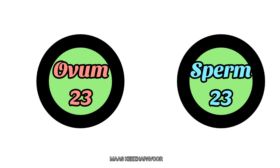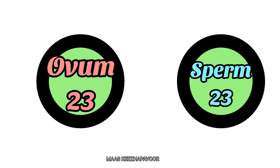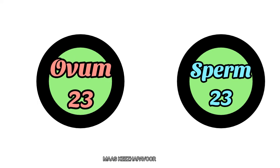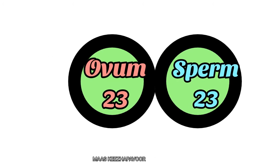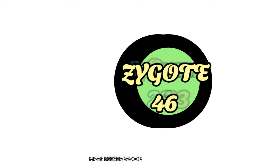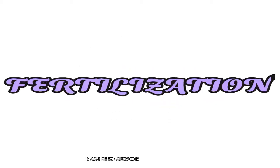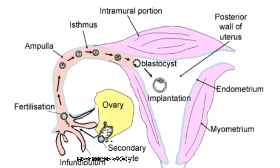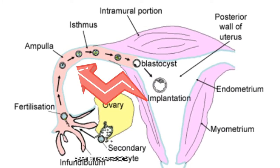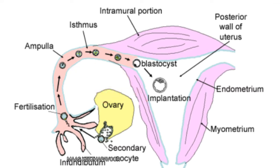The haploid ovum with 23 single chromosomes and the haploid sperm with 23 single chromosomes unite to form a zygote, which is diploid in nature. This is called fertilization. Normally, fertilization occurs in the ampulla of the fallopian tube.